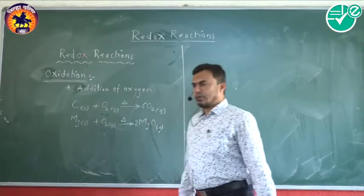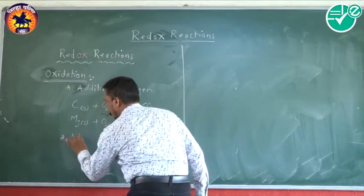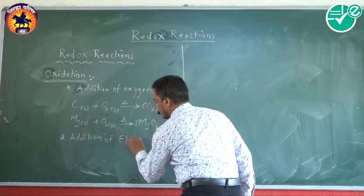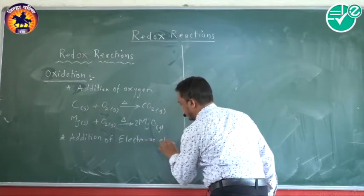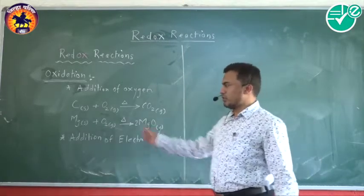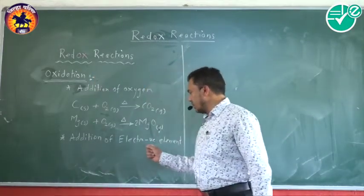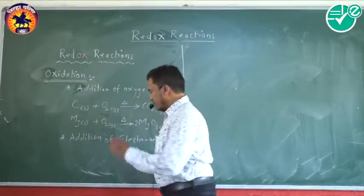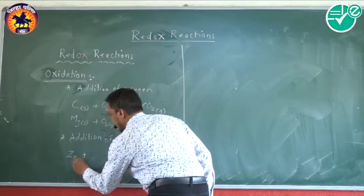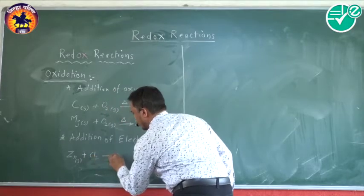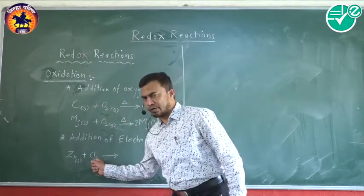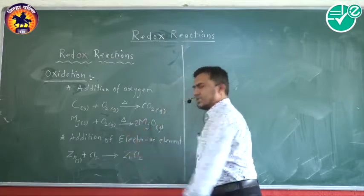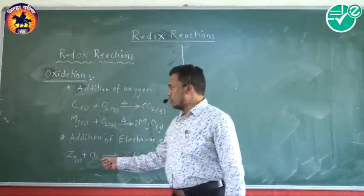Addition of oxygen is oxidation. Another definition of oxidation is addition of an electronegative element. If you add an electronegative element to a species, it is also called oxidation. For example, zinc reacts with chlorine. Chlorine is an electronegative element; it gets added to the zinc, forming zinc chloride. So it is called oxidation.